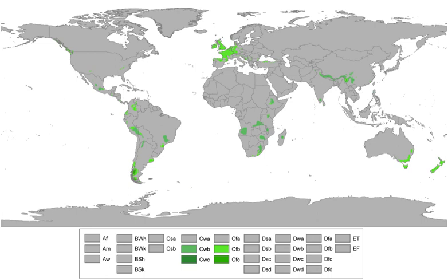It is the predominant climate type across much of Western Europe including the United Kingdom, the Pacific Northwest region of the United States and Canada, portions of Central Mexico, Southeastern South America, Southeastern Australia including Tasmania, New Zealand, as well as isolated locations elsewhere.